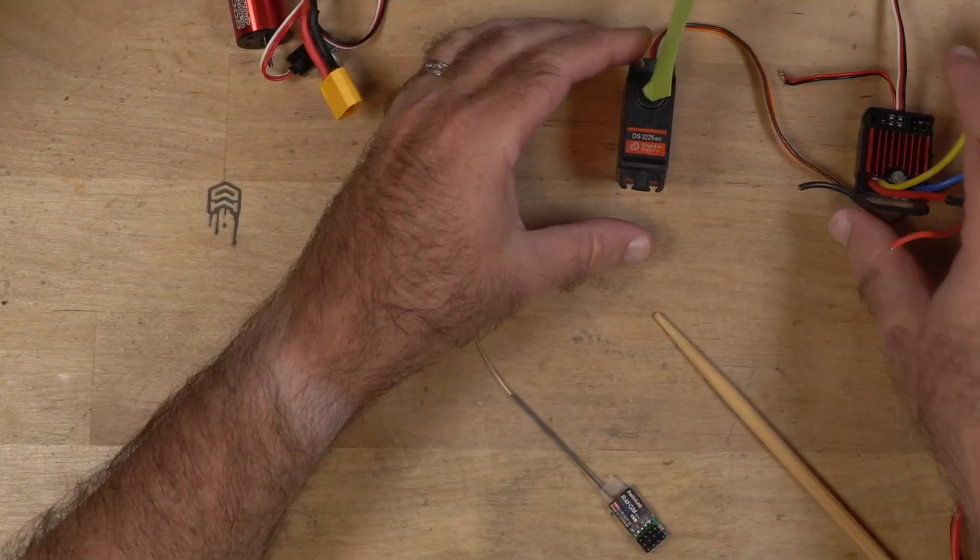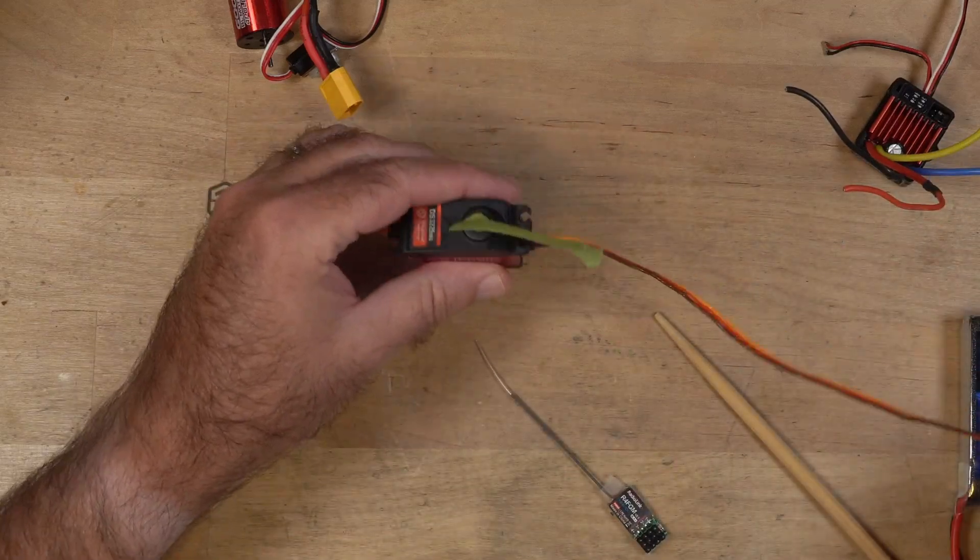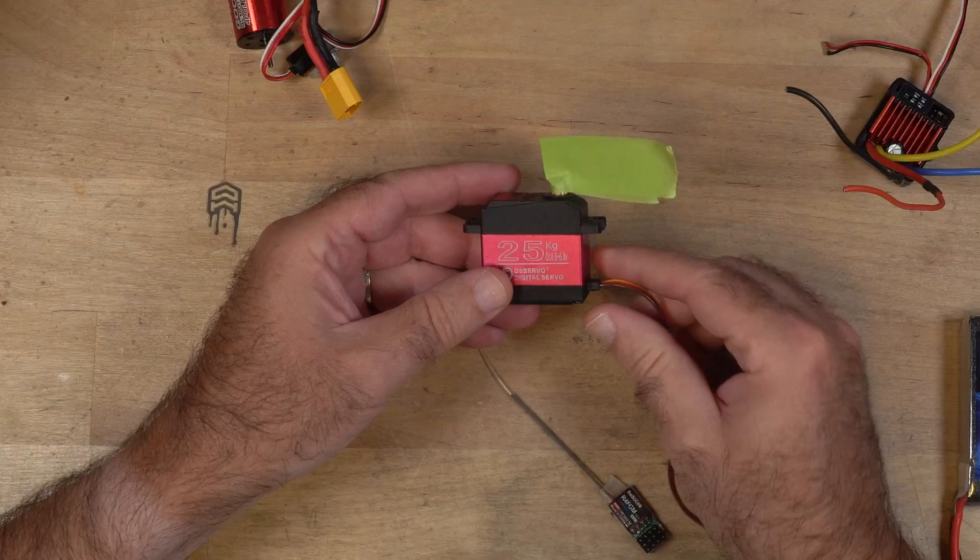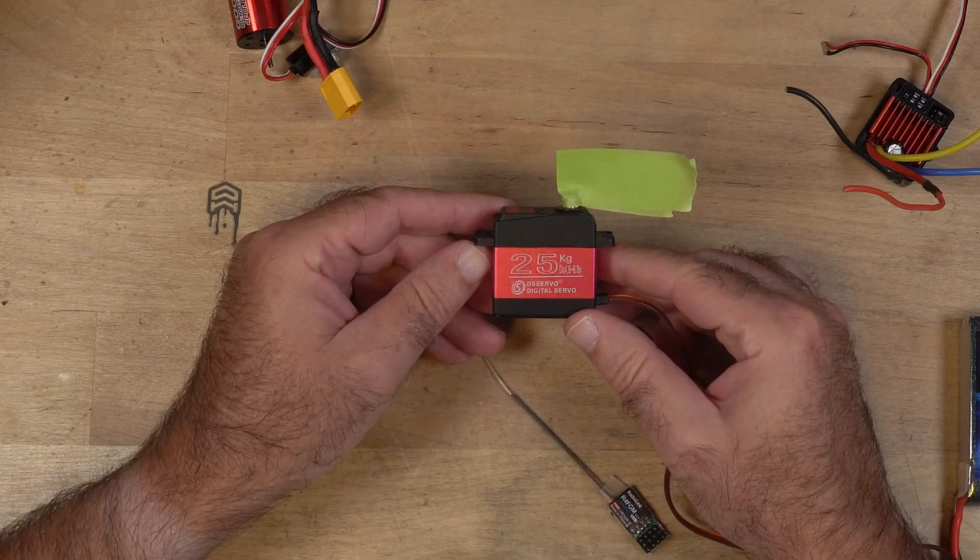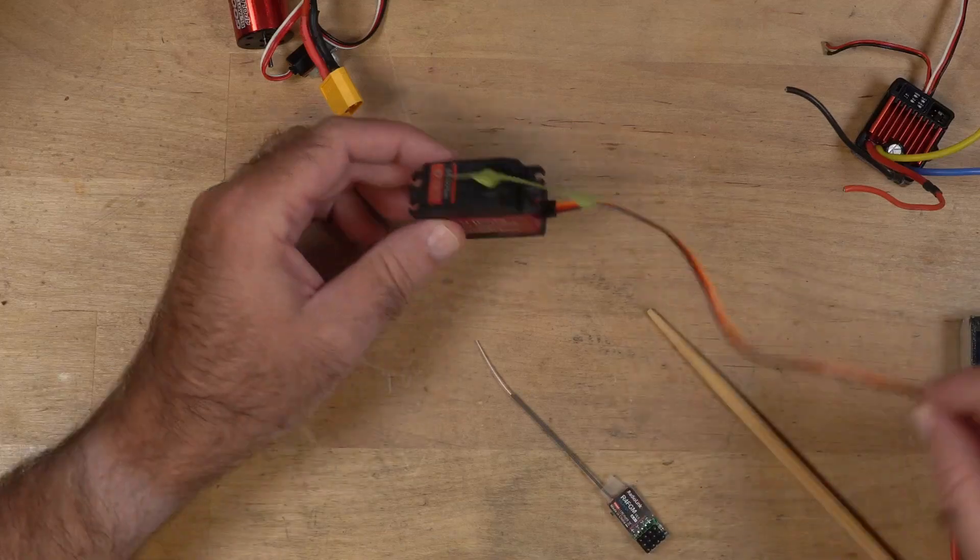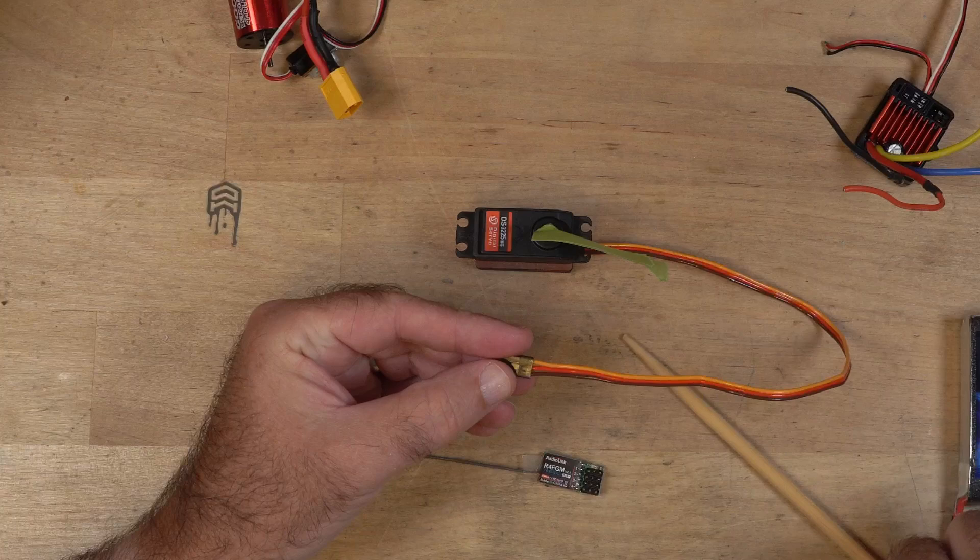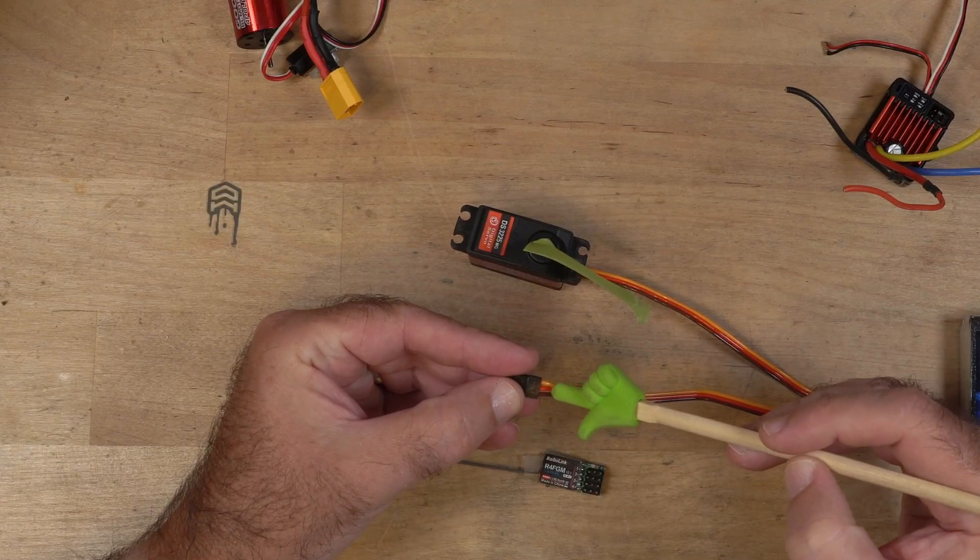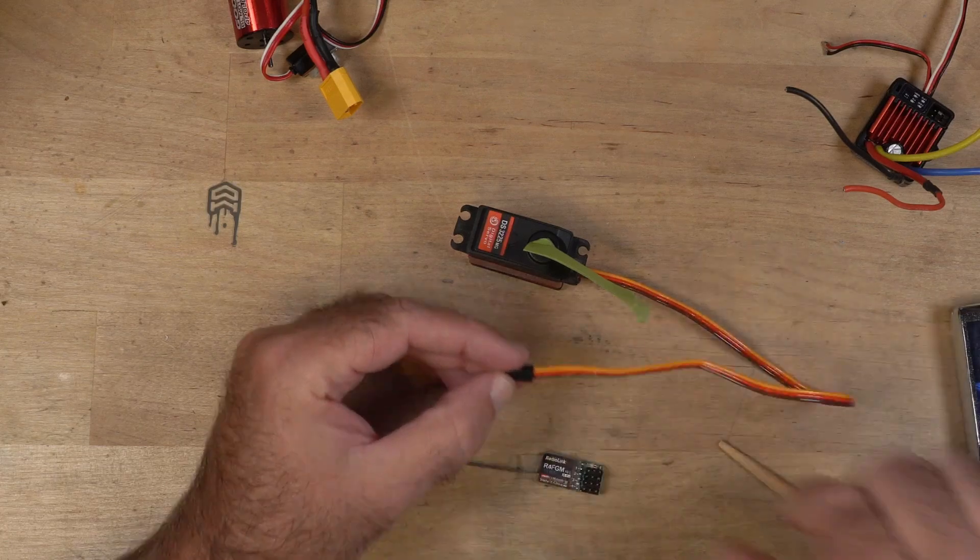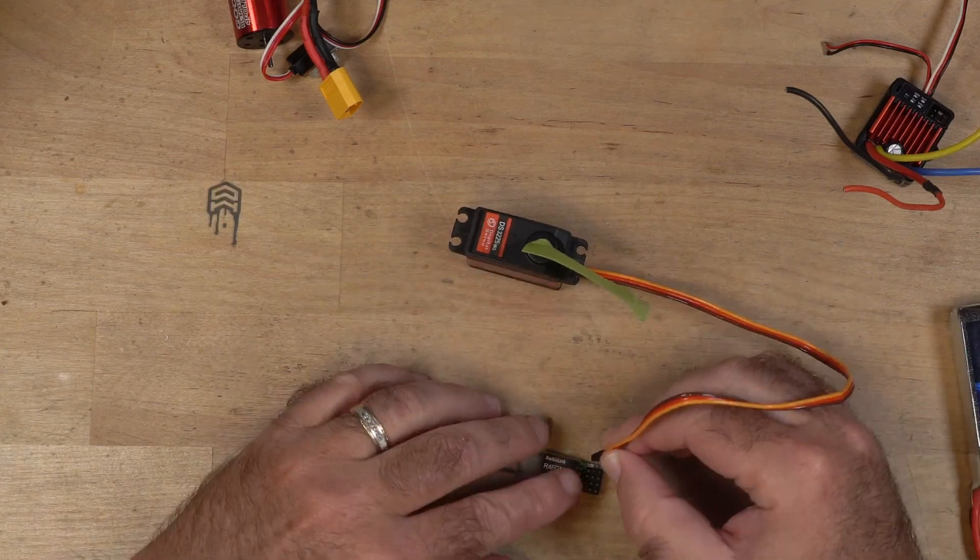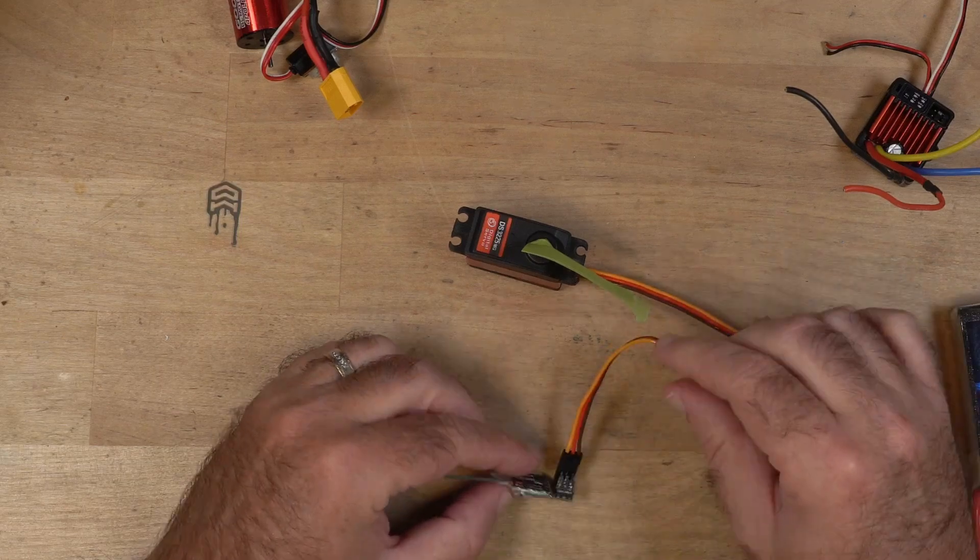So let's talk about channel 1 first. Channel 1 is normally your steering servo, and your steering servo could be a small little baby servo or it could be a pretty large servo like this one. They'll have a wire coming out of the end of it as well, and that'll plug into your receiver. Again this has brown, red and yellow. Negative, positive, signal. So I will plug this into my receiver like that. And now it's plugged in and ready to go.